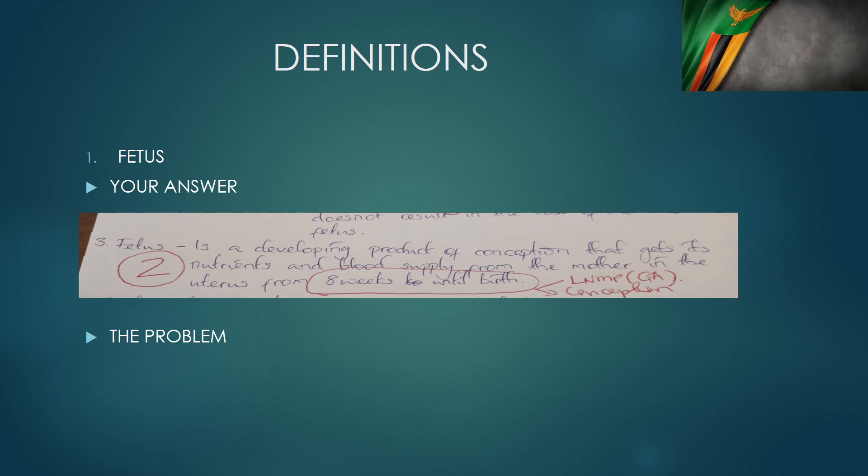When asked to define fetus, the important thing is knowing the distinction from embryo, morula, zygote, baby, and neonate. Don't mix up the words. Fetus starts at eight to ten weeks — eight weeks from the date of conception, or ten weeks from the date of the last normal menstrual period. Be careful about terminology: is it a baby, an offspring, a neonate, a fetus, or an embryo? Don't mix those things up.